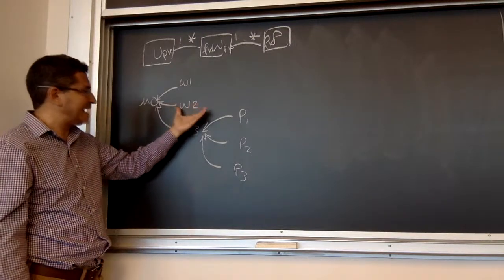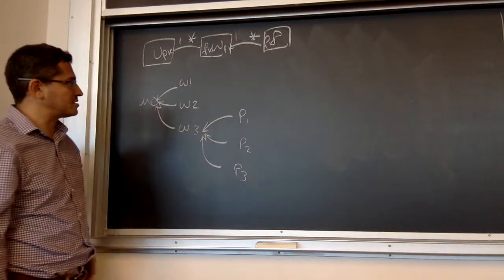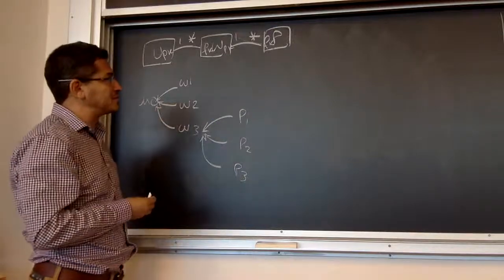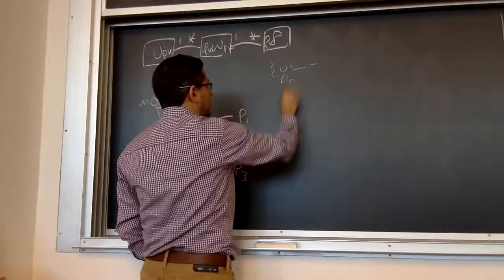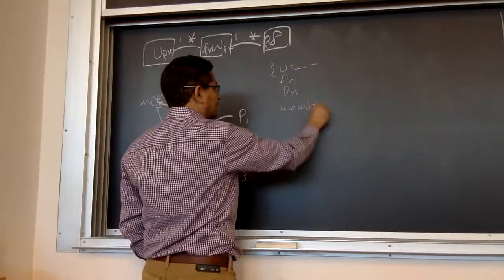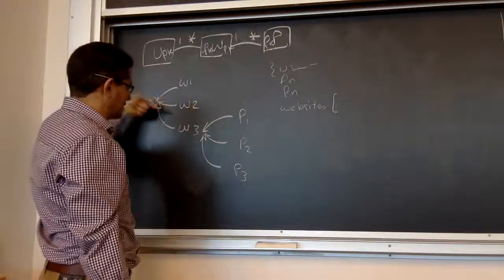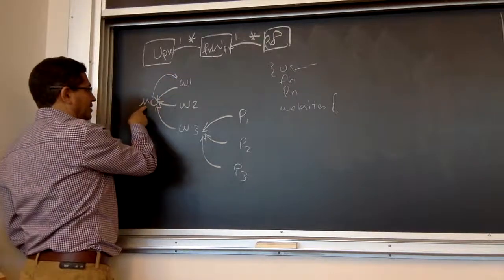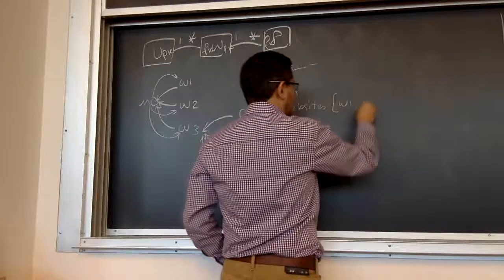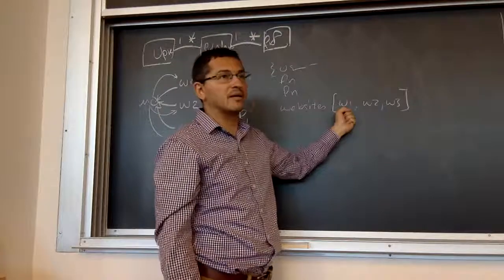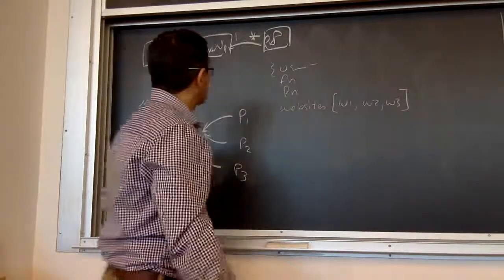You wouldn't have a website class having a reference back to its parent either. MongoDB allows you to do that. In the declaration of the user schema, you have the username, first name, last name, and you can also define websites as an array of references to their child websites. So the user would have references — say w1, w2, w3 — an array of references to each one of the websites.